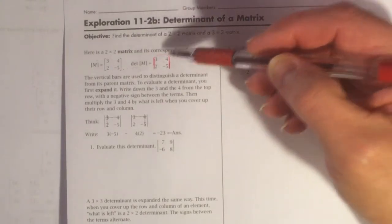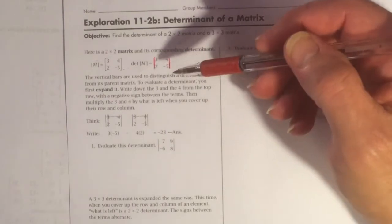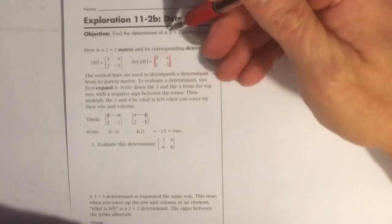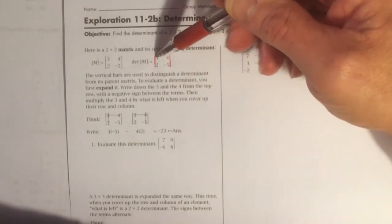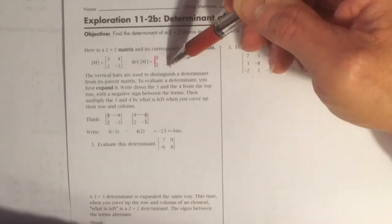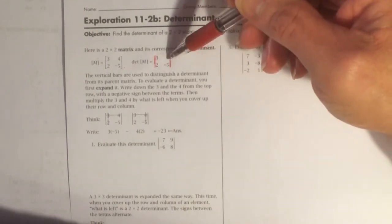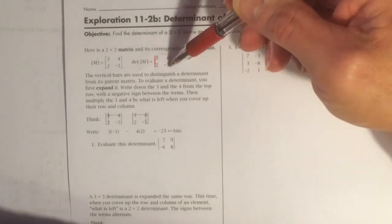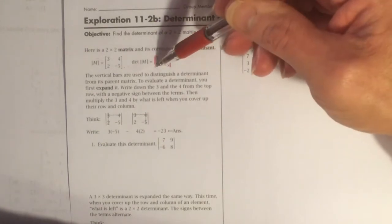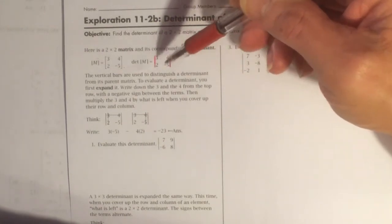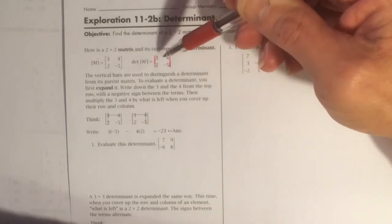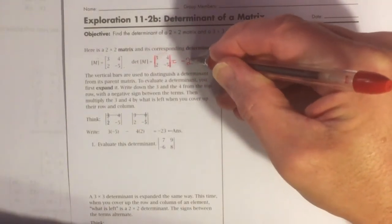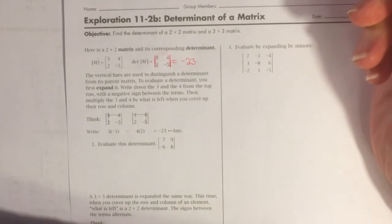Let me start out by saying getting the determinant of a two-by-two matrix is remarkably easy. All you have to do is multiply these two numbers together and these two numbers together and subtract them. 3 times negative 5 is negative 15. 2 times 4 is 8. Negative 15 minus 8 is negative 23. And that's the determinant for a two-by-two matrix.